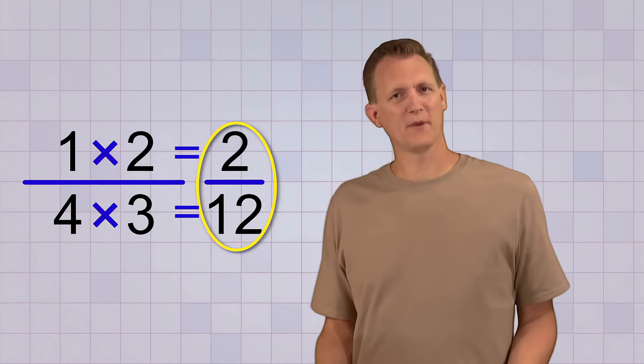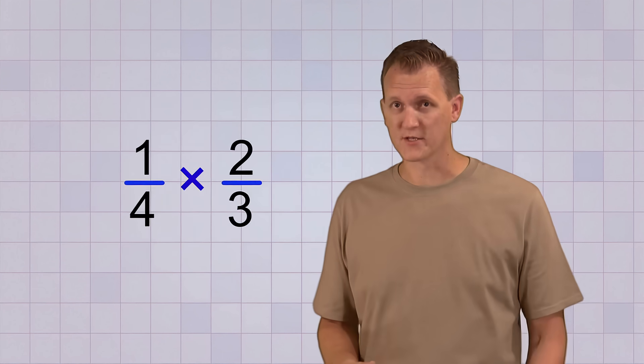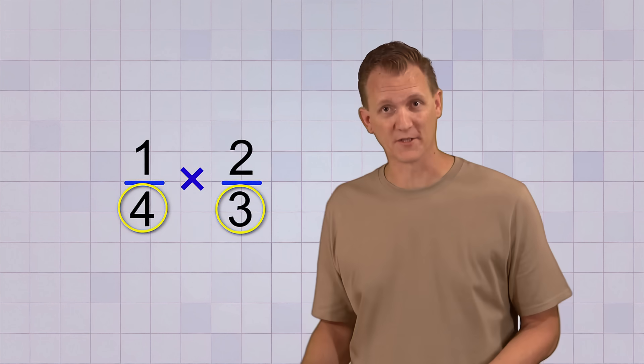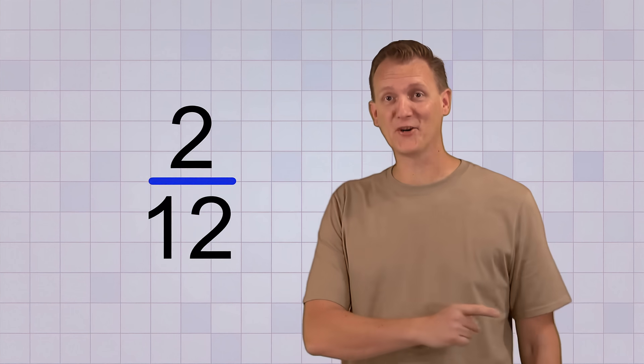So what does all this mean? Well, it means that to multiply fractions, all you have to do is multiply the top numbers, and then multiply the bottom numbers, and ta-da! There's your answer.